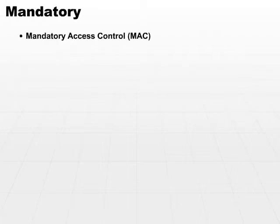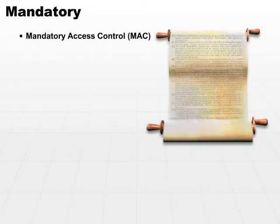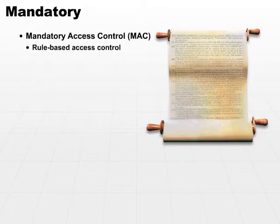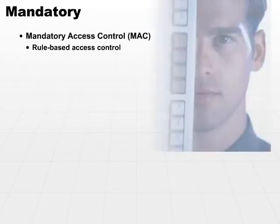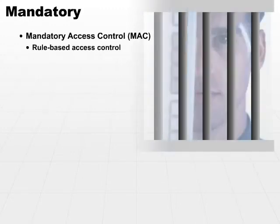The first is mandatory access control. As opposed to discretionary, there is a mandatory set of rules that everyone must abide by, referred to as MAC or MAC controls in some cases. It is rule-based access control. This rule-based access control means that data owners have far less freedom than with the previous example, discretionary access control.